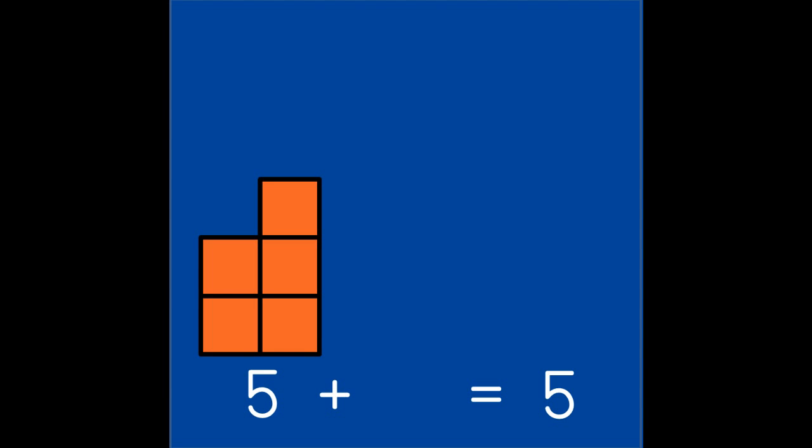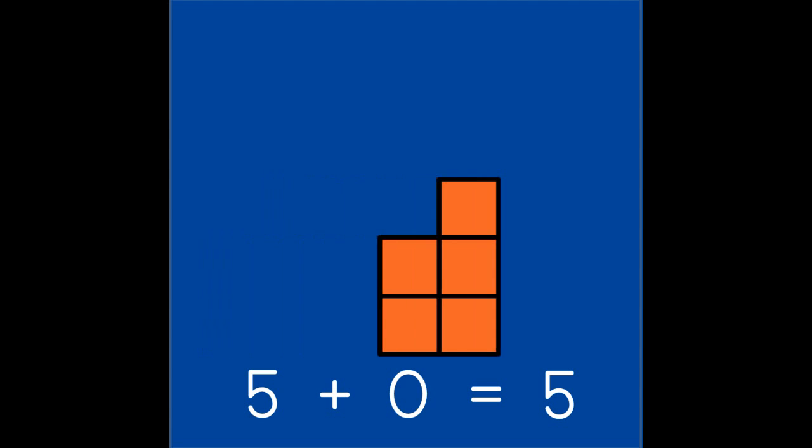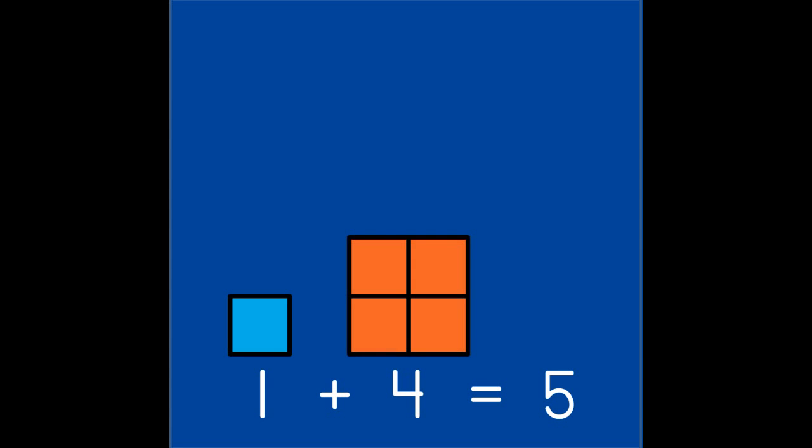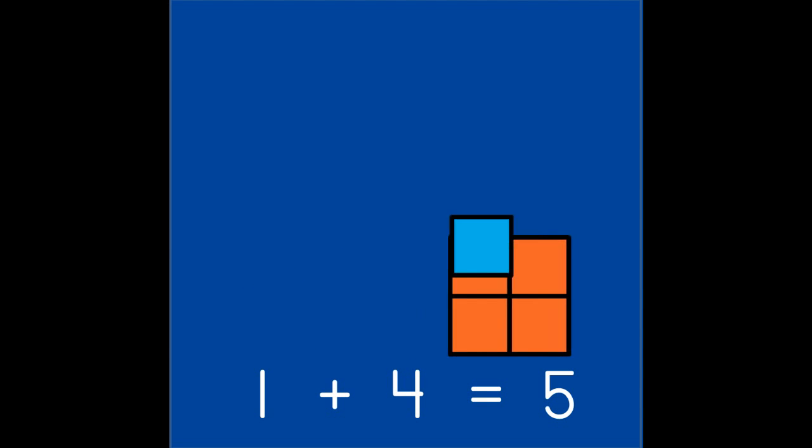Here are our tricky partners. What partner does 5 need to make 5? Did you say 0? You're getting it! 5 and 0 are partners of 5. If we have 1, how many do we need to make 5? That's it — 4! 1 and 4 make 5.